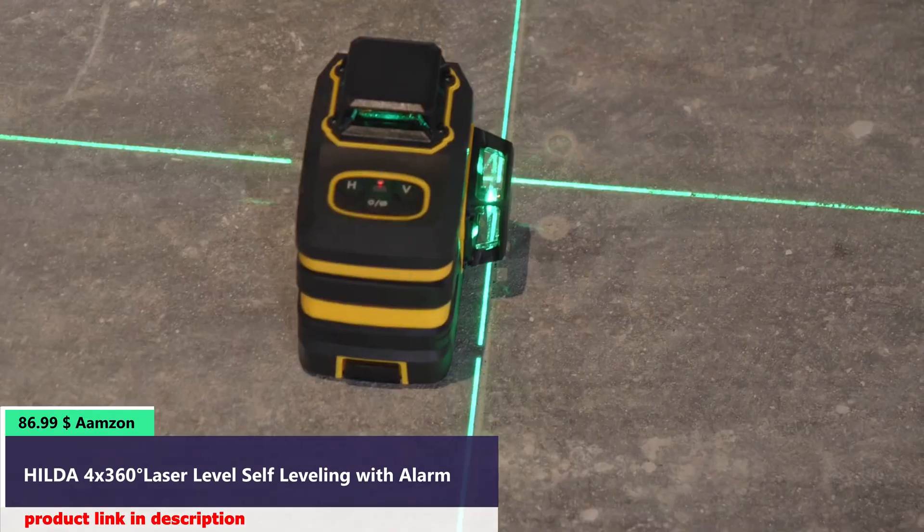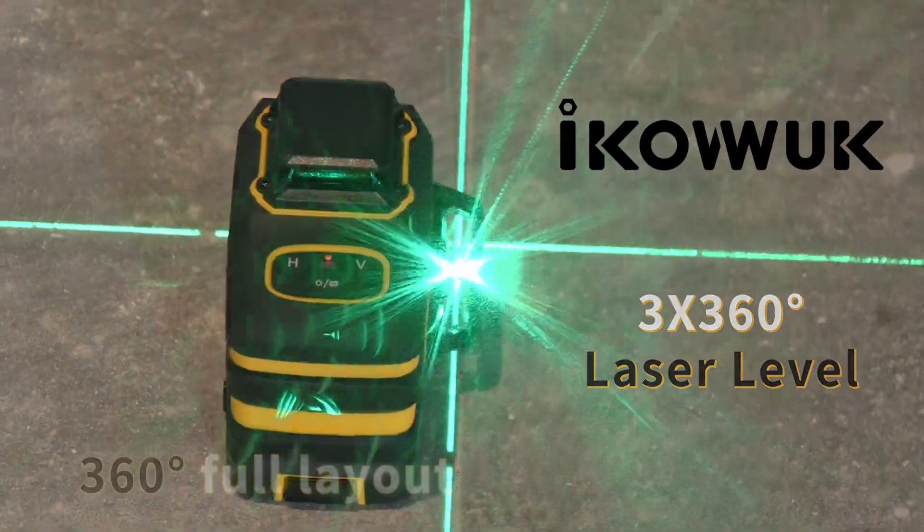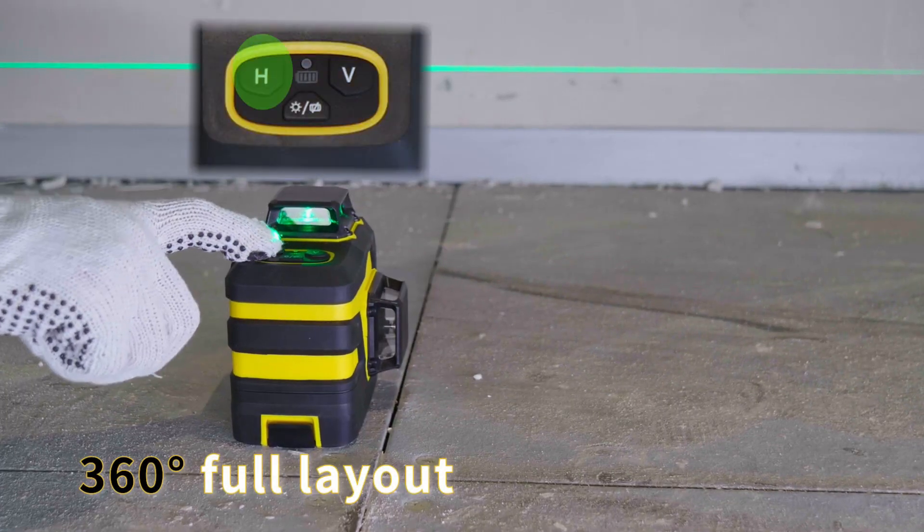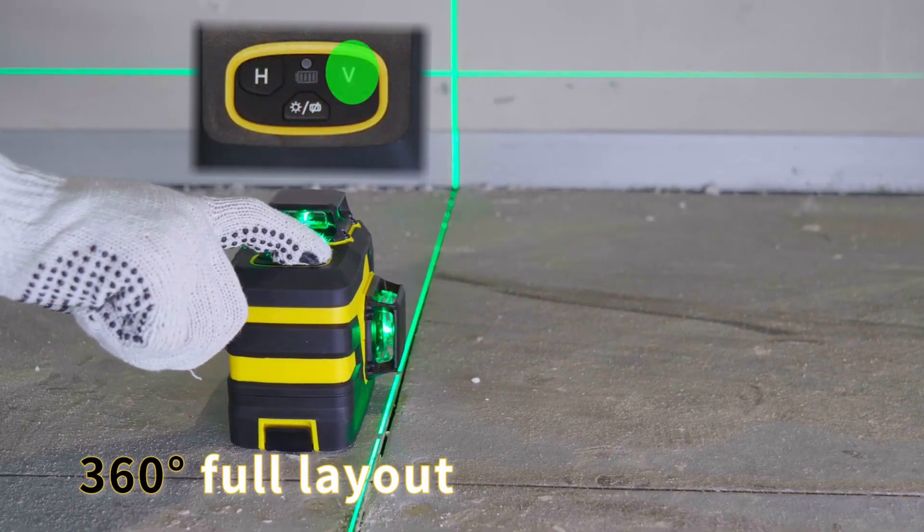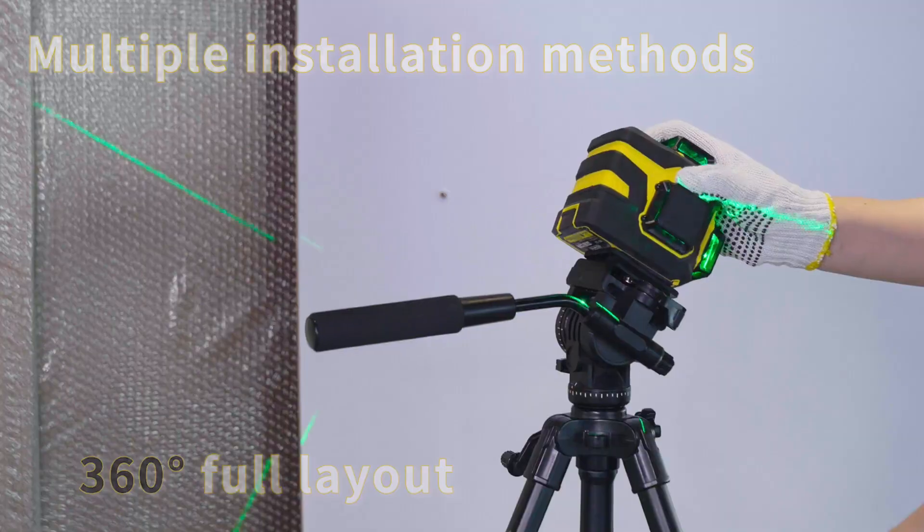1 by 360 degrees horizontal and 2 by 360 degrees vertical, which can cover all around the room. H stands for horizontal laser, V stands for vertical laser, you can easily switch any laser you want.